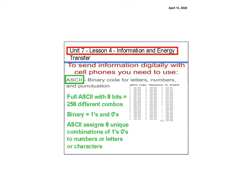So to send information digitally with cell phones, you need to use this thing called ASCII. And that's what this word is right here. This is the word ASCII, which is binary code for letters. Now, I know this is really, really tiny on your screen, but the idea here, these are all different letters. So this letter up here, I believe, is an O.